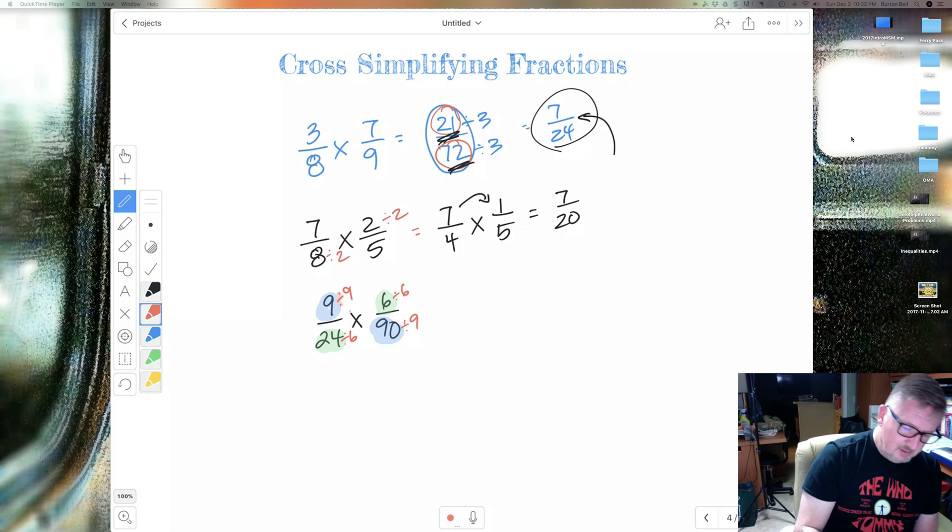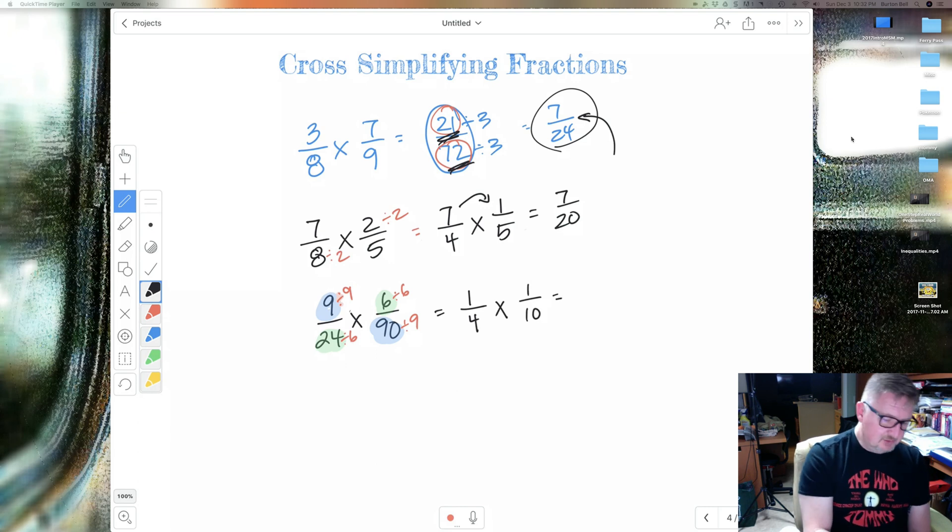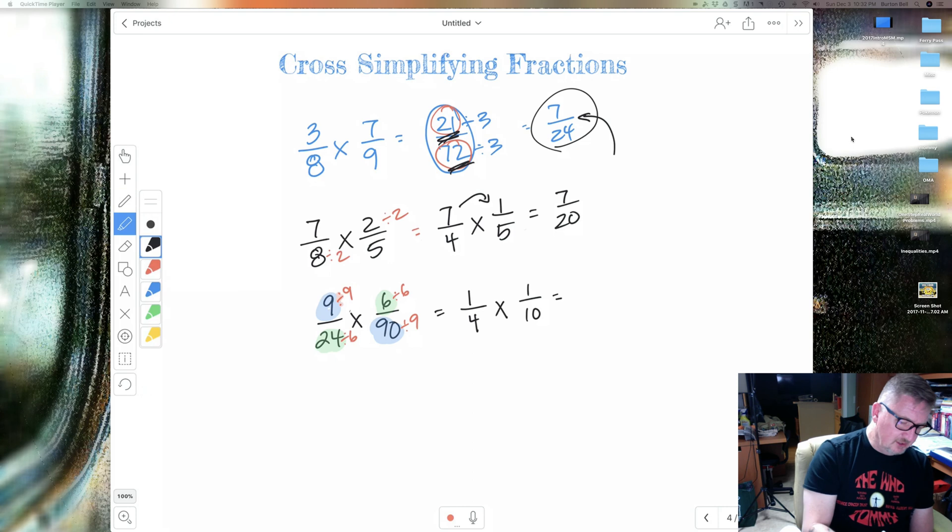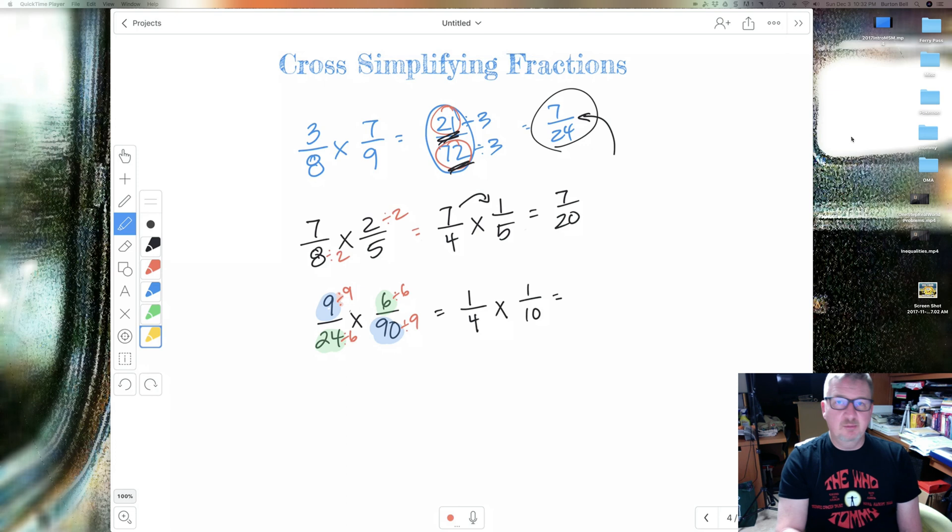So let's rewrite this after we simplify it. 9 divided by 9 is 1. 24 divided by 6 is 4 times 6 divided by 6 is 1. 90 divided by 9 is 10. Now, just for giggles here, I'm just going to let you know that you cannot simplify that 4 with that 10. We can't divide those by 2, because they're both denominators. It has to be a numerator with a denominator.